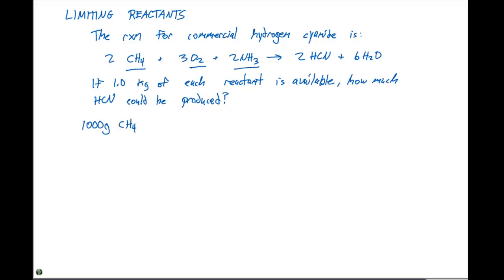So, if we have 1,000 grams of CH4, from the periodic table, we know that one mole of CH4 is going to be equal to 16.0 grams of CH4. Then, from the balanced chemical equation, for every two moles of CH4 that reacts, we have two moles of HCN that are produced. This is going to give us a total of 62.5 moles of HCN.